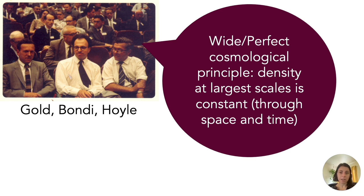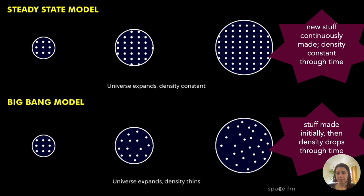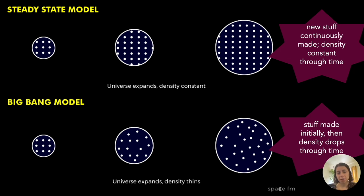If the universe is expanding, how can we have a constant density and also retain expansion? Here's what steady state theorists say. On the bottom panel, Big Bang predicts: start with some distribution of stuff, universe expands, density thins out — less stuff per unit volume. On the top panel, steady state says: the universe expands, but density remains constant. How? New matter has to be created continuously in order to populate the newly expanded universe. That's their model — new stuff is being made.